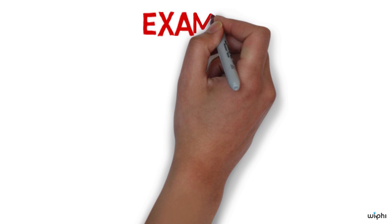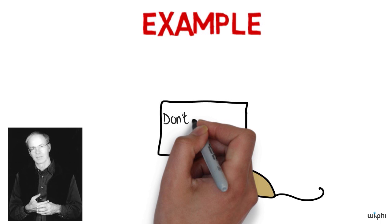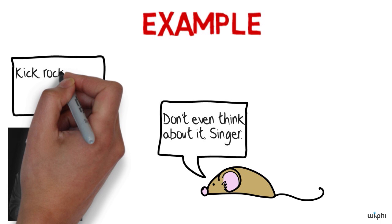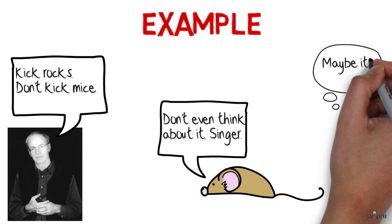So Peter Singer uses the example of kicking a rock versus kicking a mouse down the street. He says, a rock is not sentient, and so a rock will not suffer if you kick it down the street. So you have no moral obligation at all not to kick a rock down the street. On the other hand, a mouse is sentient, so a mouse will suffer if you kick them down the street. And so you do have a moral obligation not to kick the mouse down the street.